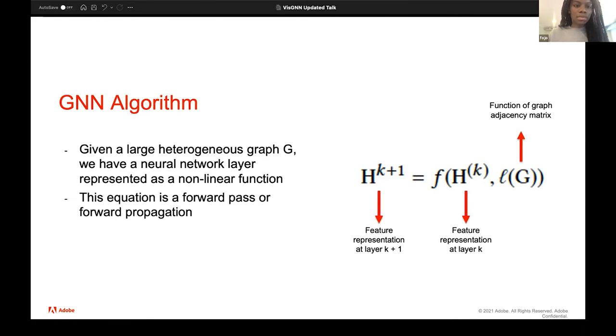So we started with this graph neural network algorithm. Given a large heterogeneous graph G, we have a neural network layer represented as this nonlinear function where we have h^(k+1), which is the feature representation at layer k plus 1, equal to the function of h^k, the feature representation at layer k, and lambda g, the function of graph adjacency matrix. And this equation kind of functions as a forward pass or forward propagation through the layers.